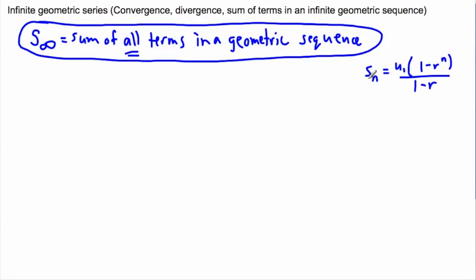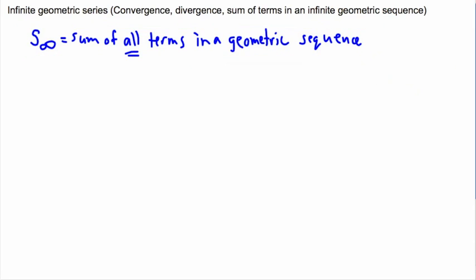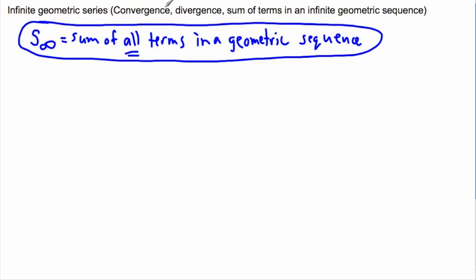The idea is to make n infinity and then see what happens — though this is not really so simple to look at. So we're going to talk about the concept of convergence and divergence, which I think will help explain why we can sometimes find the sum and why sometimes we can't.